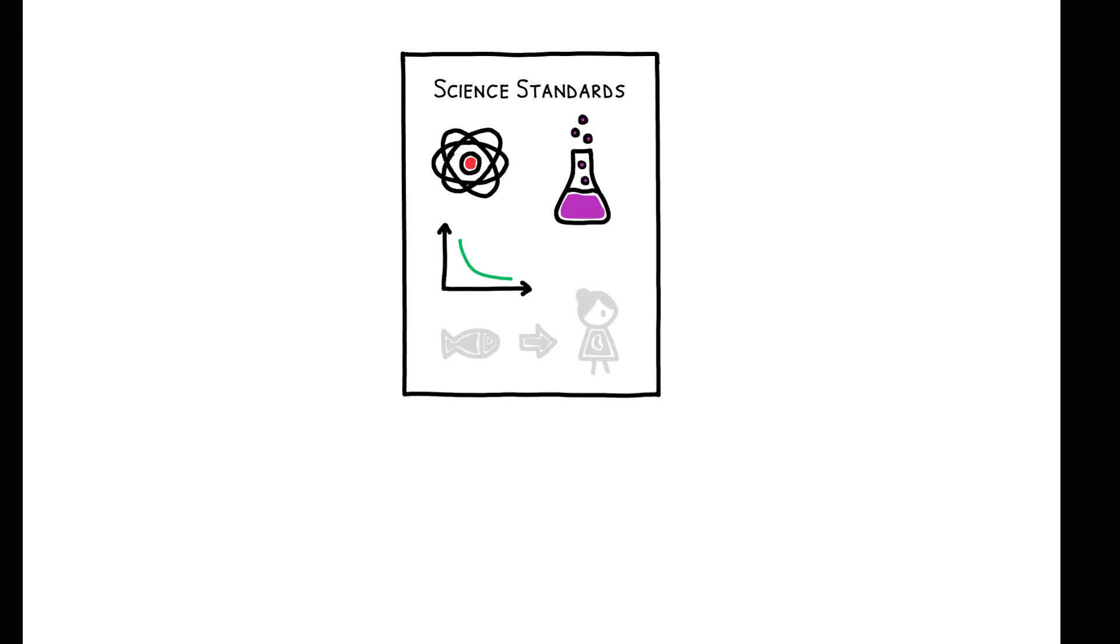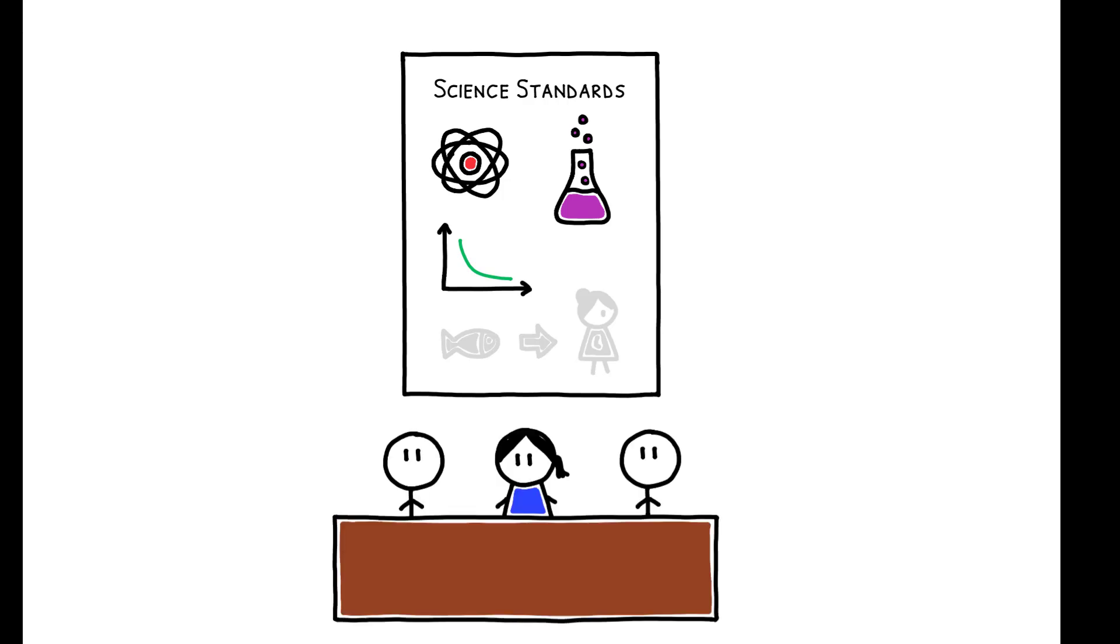Because reforms are determined by each state's Board of Education, their precise timing depends on multiple factors, including the predetermined timing of elections and the tenure length of board members, but once a reform is enacted, its implementation tends to be swift.